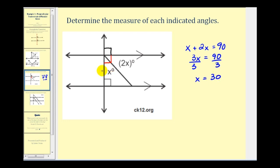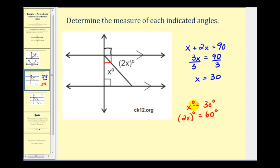Therefore this angle here that measures x degrees would be thirty degrees. And this angle here that is two x degrees would be two times thirty, or sixty degrees. Notice that the sum of these two angles is equal to ninety degrees.